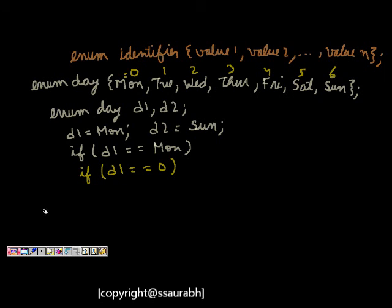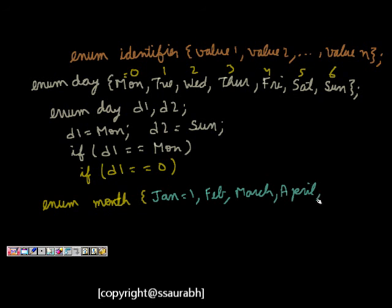But if I want to change the order, I might write enum month. I can say, let's start with Jan is equal to 1 instead of 0, Feb, March, April and then May is equal to 50. June, July is equal to 70.